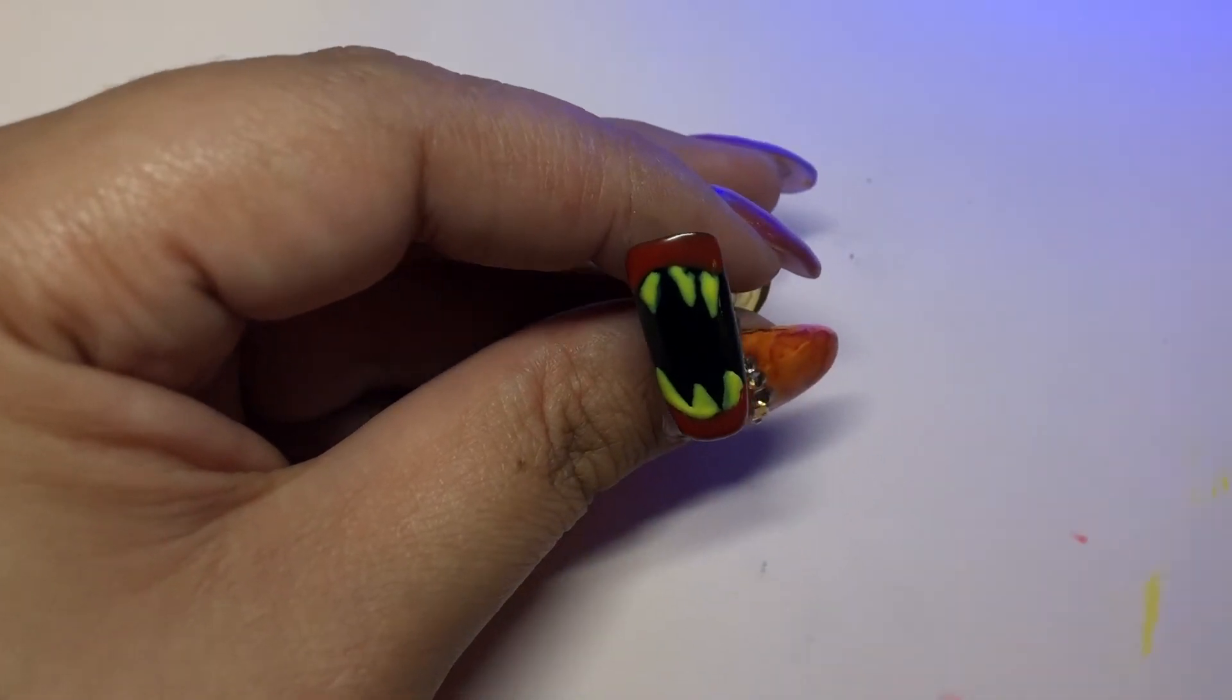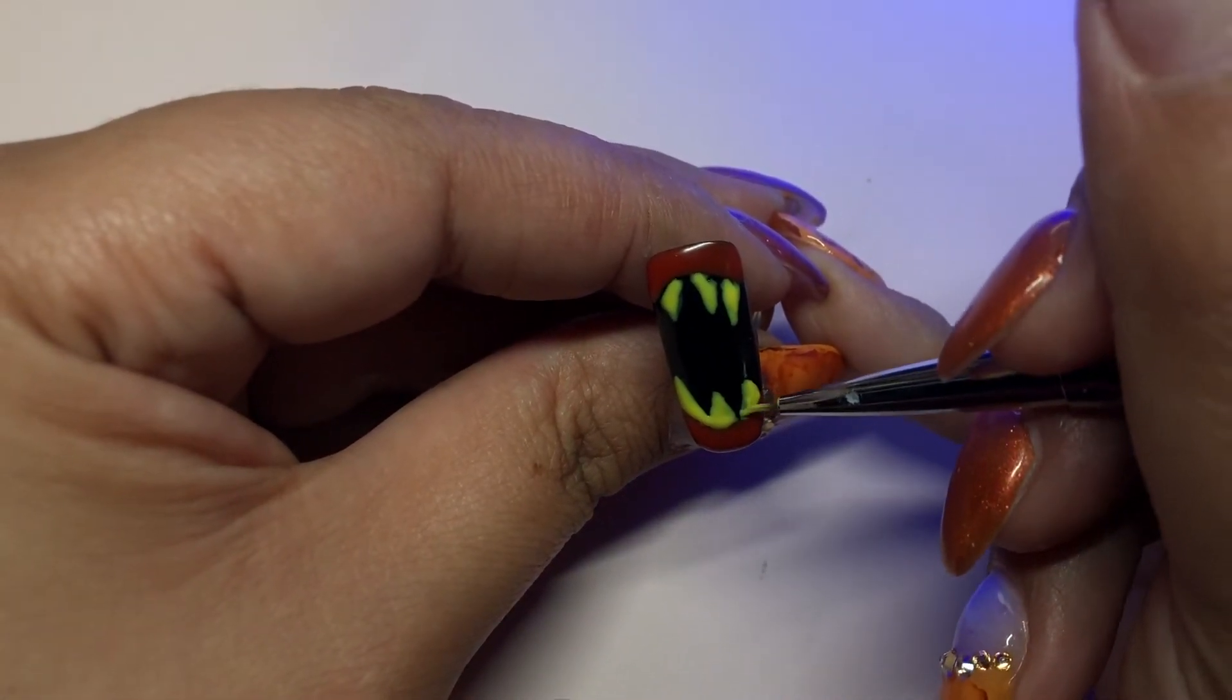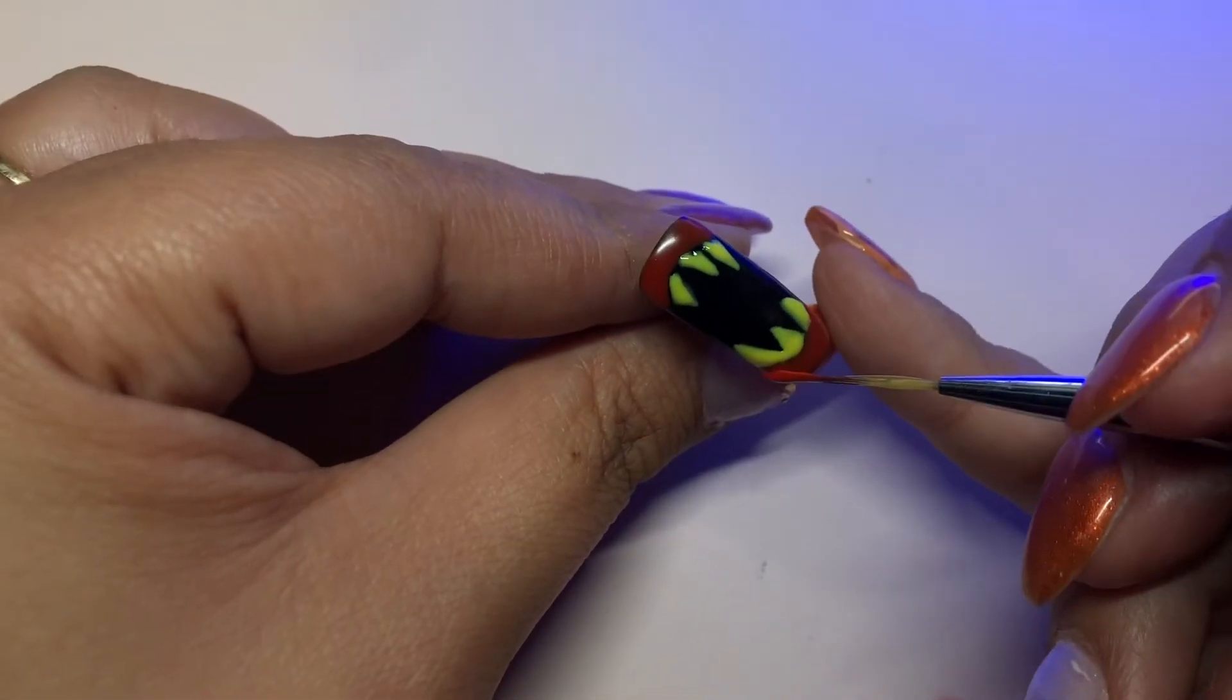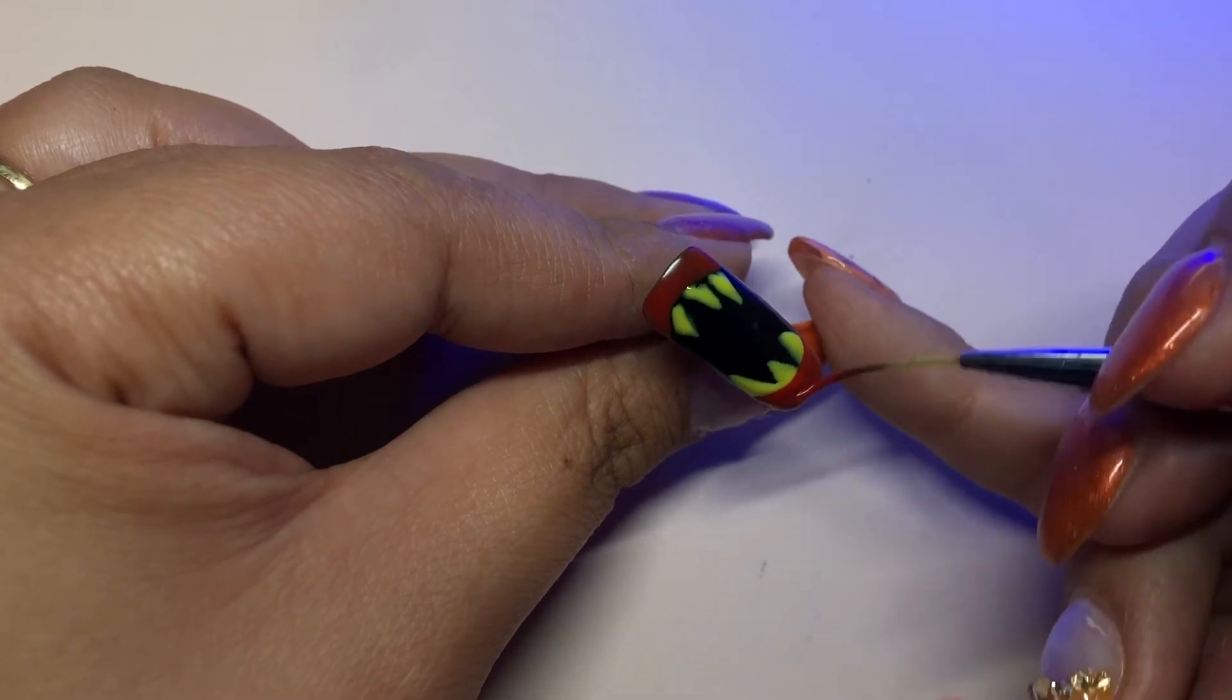Once you're happy with how your teeth look, go ahead and cure it for the final time. You're going to come back with the red and do one more layer to kind of bring everything together.